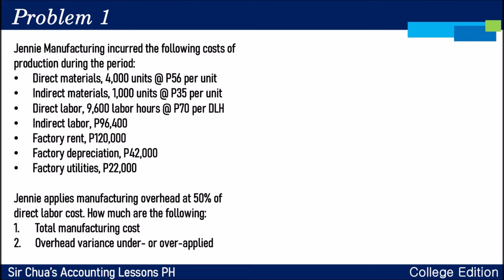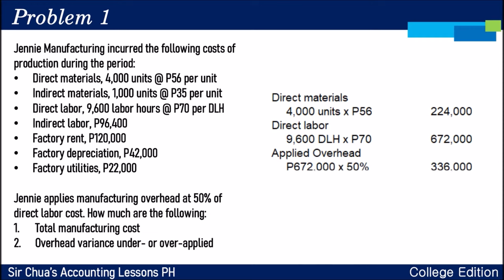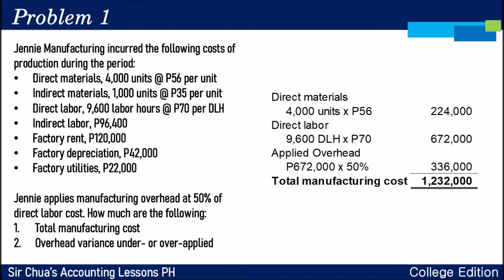Let's answer question number one. We start with direct materials: 4,000 units times 56 pesos per unit equals 224,000. Then direct labor: 9,600 labor hours times 70 equals 672,000. Since we are in normal costing, the company applies manufacturing overhead at 50% of direct labor cost, so applied overhead is 672,000 times 50% equals 336,000. The total manufacturing cost — materials, labor, and overhead — is 1,232,000.